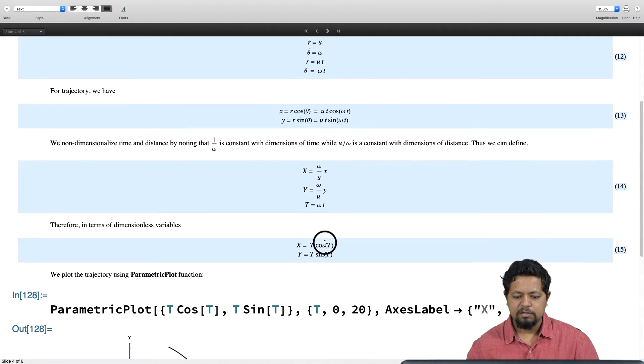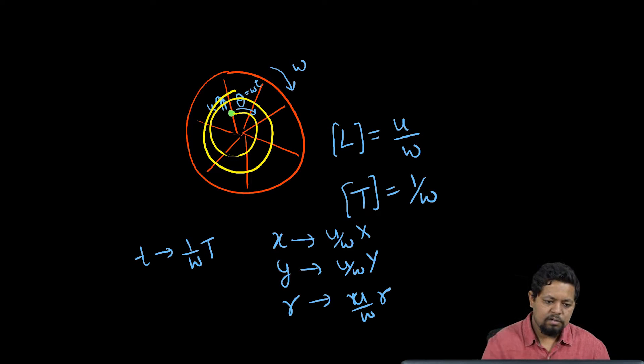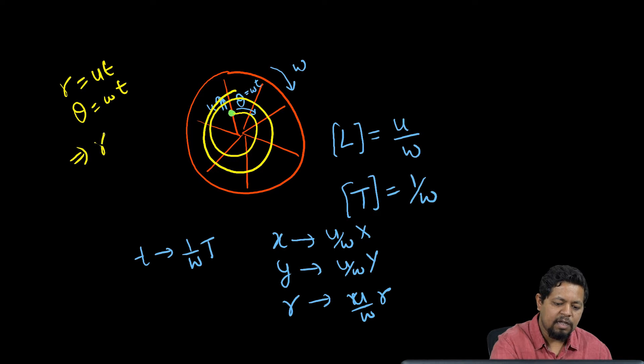In terms of polar coordinates, we simply get r is equal to ut. Substituting time in terms of theta—that is, eliminating time out of this equation—we get r by theta equal to u by omega, or in other words, r equal to u by omega theta.